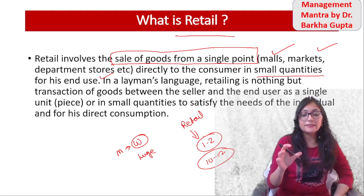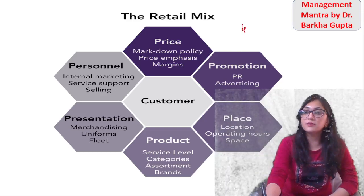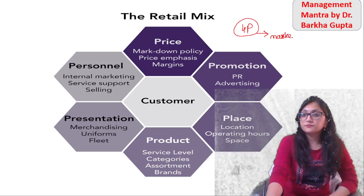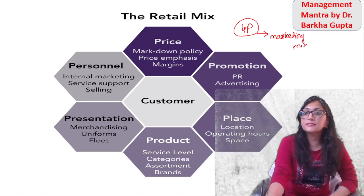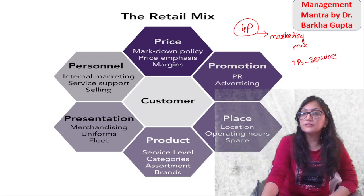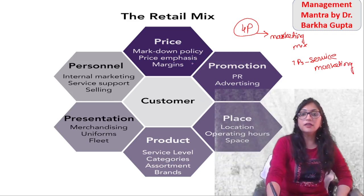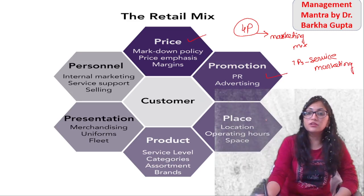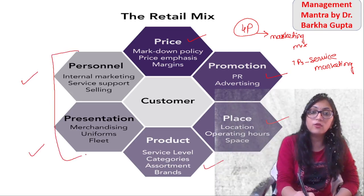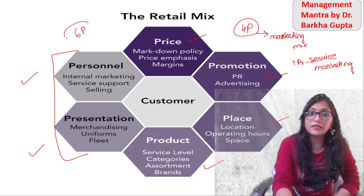So that is basically retail. Now we are talking about retail mix. As we have seen, you have 4 Ps related to the marketing mix. And in service marketing, we have studied 7 Ps. Now, in the retail mix, you will see: Price, Promotion, Place, Product, Presentation, and Personals — two extra added. So in total, you will see 6 Ps in retail mix.